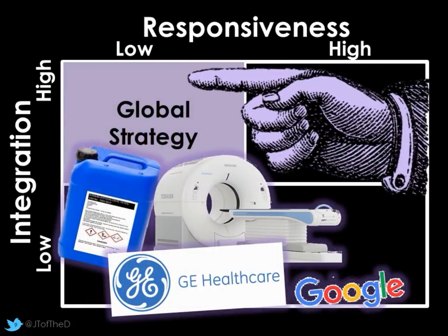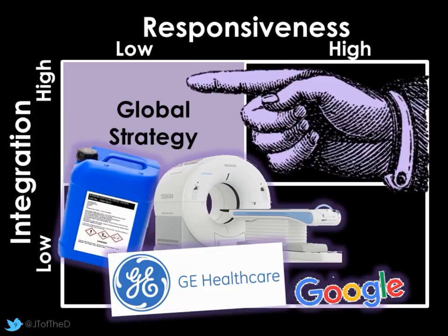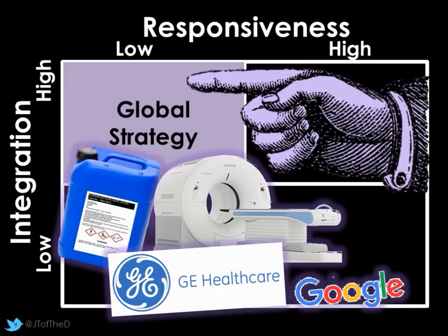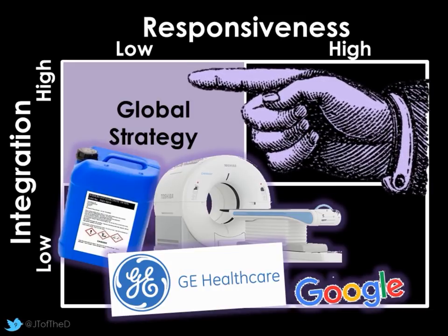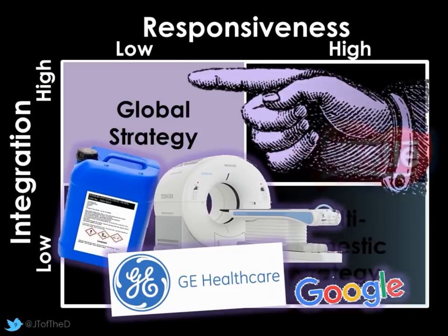The second type would be a global strategy. Again, responsiveness is pretty low — it's the same product or service being sold across the world. For example, Google across the world is the same product regardless of where you are. This could also be expensive technology such as a CT scanner, where it's the same product in hospitals across the world. However, there's now a higher level of integration, as companies may do R&D in countries with specialism and particular skills and technologies, and may have production elsewhere to get those economies of scale. This is the same in healthcare as well as chemicals that are traded internationally.